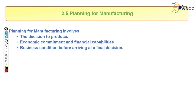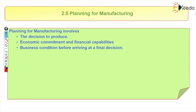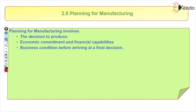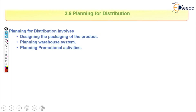Next is planning for manufacturing. After completing detailed design, we proceed to manufacturing. In this step, the decision is made to produce the product. Here we must consider economic commitments and financial capabilities — for producing any product we must have good financial stability. We must also assess business conditions before arriving at the final decision, to avoid a situation where we have completed the design but then find we cannot produce it.